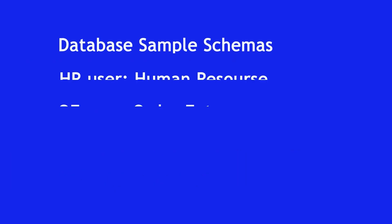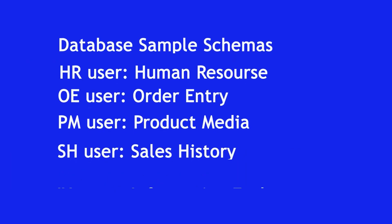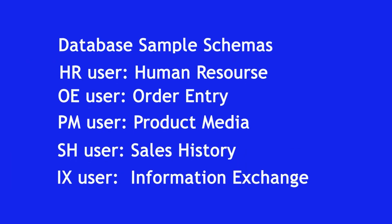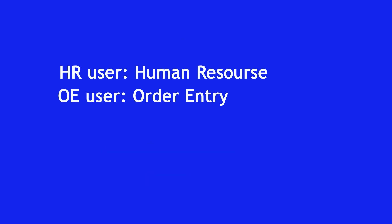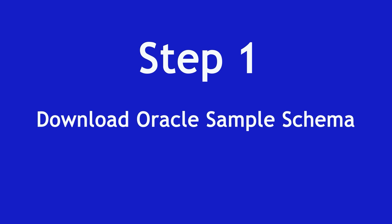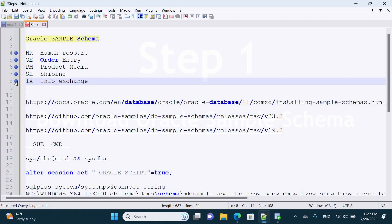We are going to install these sample schemas in this session: Human Resource, Order Entry, Product Media, Sales History, and Information Exchange. Let's get started. Step number one — we have to download the Oracle sample schema from the GitHub website.